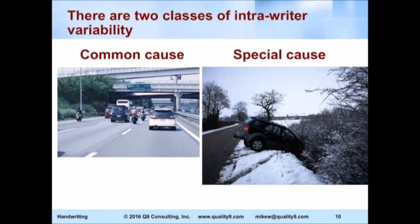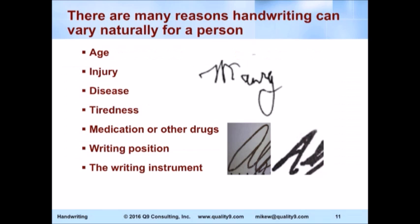So what we would do is, on those types of exemplars, we would exclude them, because it doesn't fit with anything normal as we see the natural variation of the writer. But there are many reasons why a person's writing can vary. Over time, it can be age.